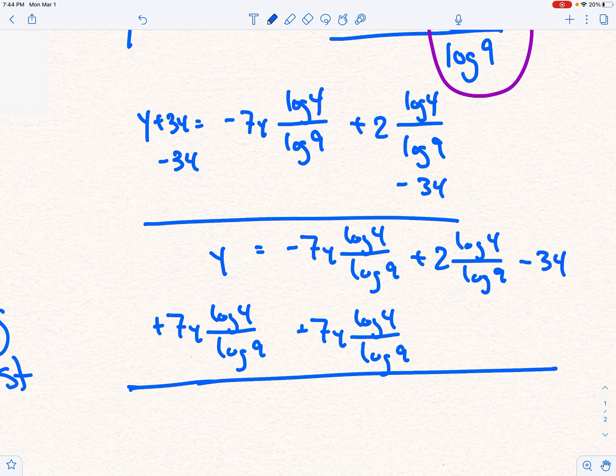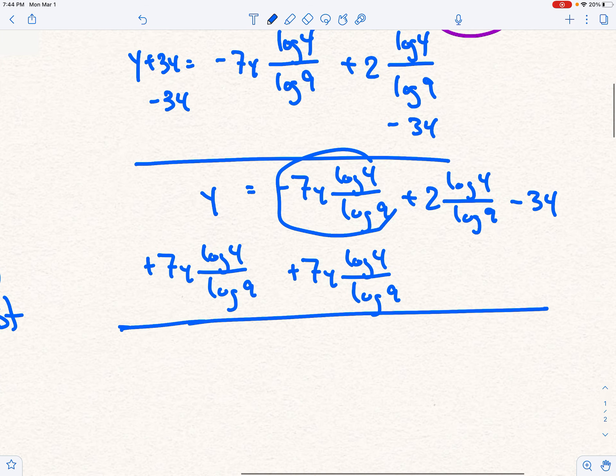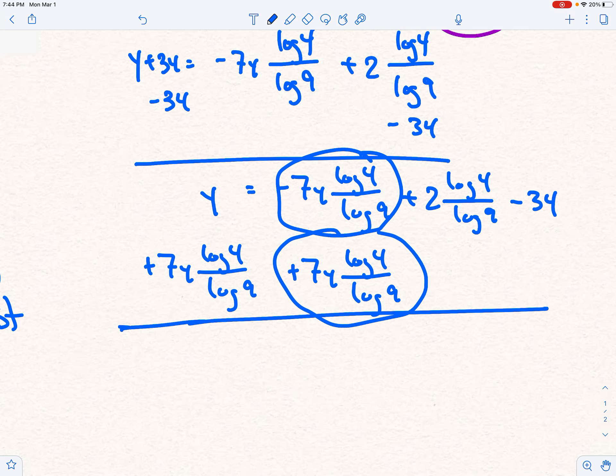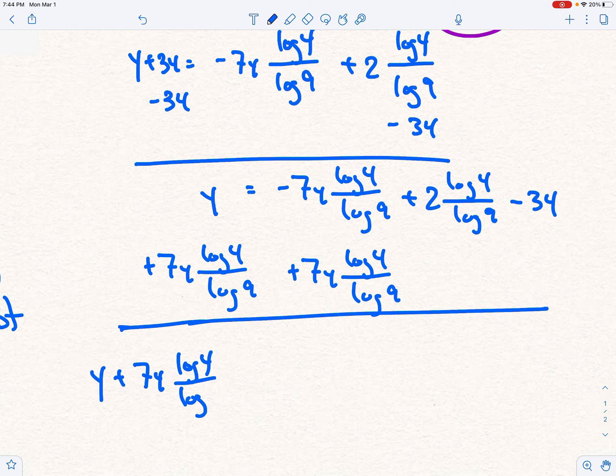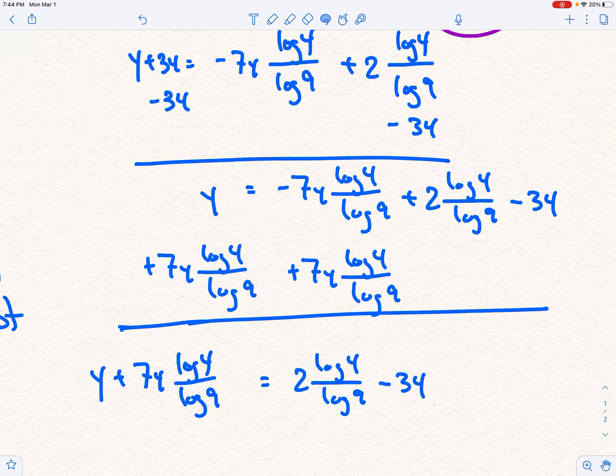And you'll see me change that minus to a plus in just a moment. All right, so now I'm going to add it to both sides. And on the right-hand side, these two, this one, and this one will cancel out. So they're gone. And I'm left with y plus 7y log of 4 over log of 9 equals this stuff. And finally, I'll smarten up a little bit with the copy-paste. Okay, so here we go. Now, there's a lot of stuff going on here.